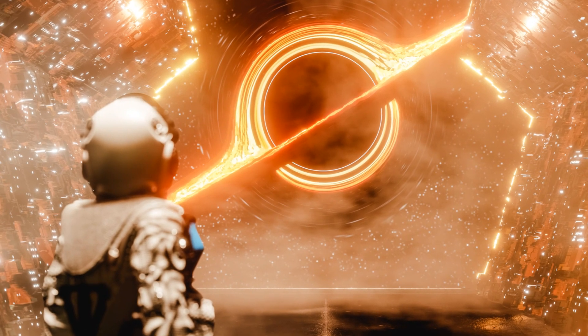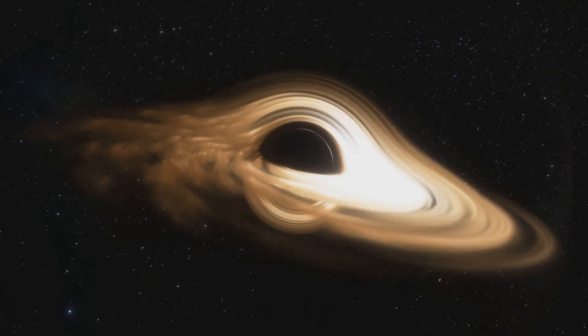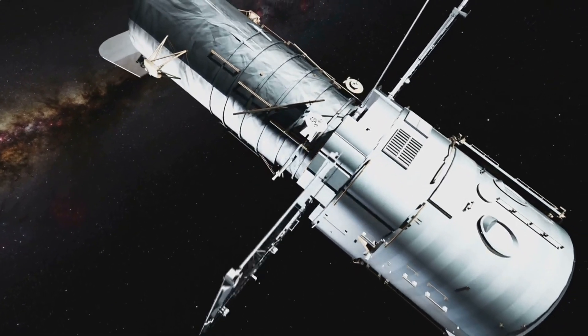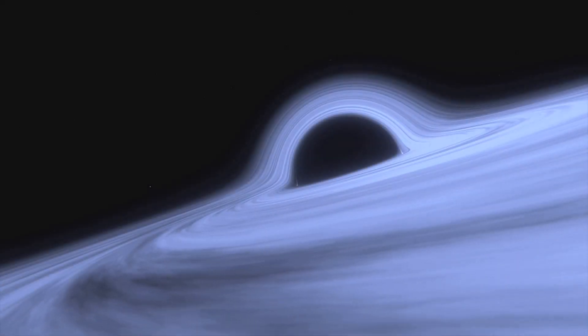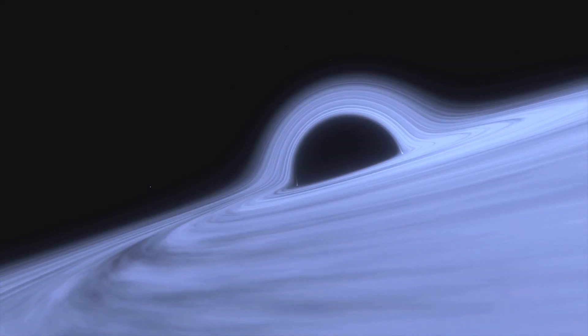Most are solitary, meaning they don't have a companion star to give them away. Instead, scientists look for gravitational lensing, where a black hole's gravity bends the light of stars behind it. As our technology improves, we may uncover even more of these hidden monsters, giving us a clearer picture of just how many of these stellar corpses are scattered throughout the Milky Way.